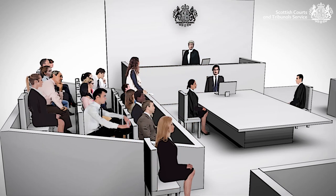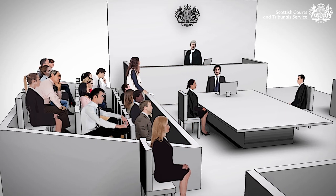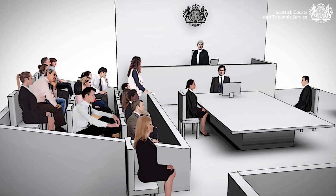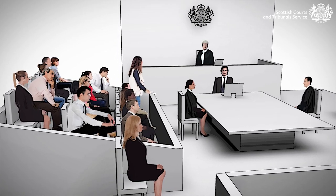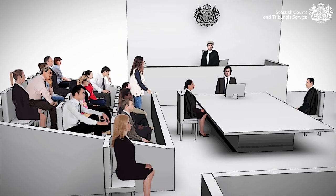The verdicts available to the jury will have been explained by the judge. It is a criminal offence for anyone to disclose information about the jury room discussions or to divulge any individual juror's opinions. When you come back to the courtroom, the clerk will ask the spokesperson to deliver the verdict on each charge.